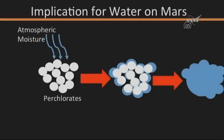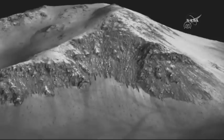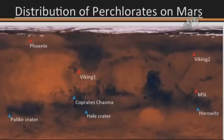This is one possibility for explaining the formation of RSL — this sort of physical process can explain the features that we observed. The discrete darker patches observed in this image may be formed by deliquescence. Our detection of perchlorates at RSL sites are shown here in blue.